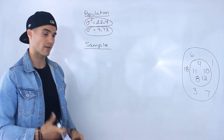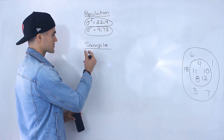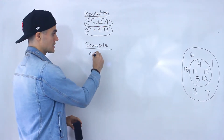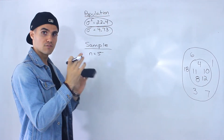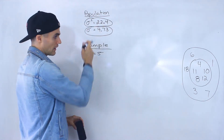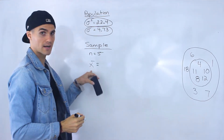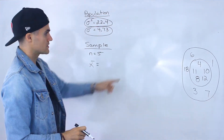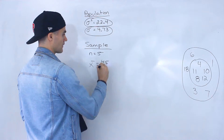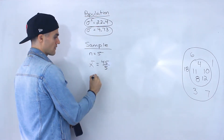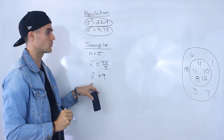Now let's move on to the sample, which is within the small circle. The number of observations — small n — is 5; there are 5 data points in the sample. First, just like with the population, we find the average. We sum up 4, 11, 10, 8, and 12, which gives 45, then divide by 5. The sample mean x̄ equals 9.